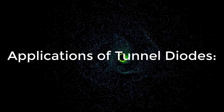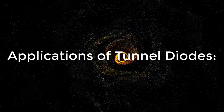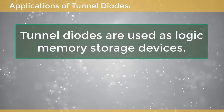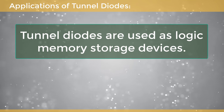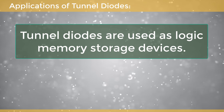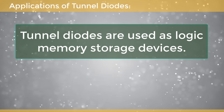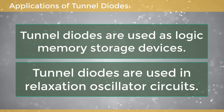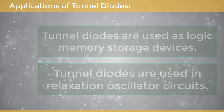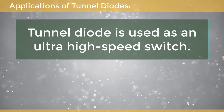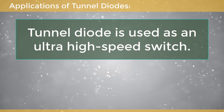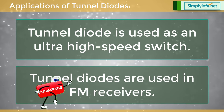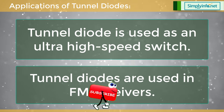Applications of tunnel diodes: they are used as logic memory storage devices and in relaxation oscillator circuits. They are used as ultra high speed switches and also in FM receivers.